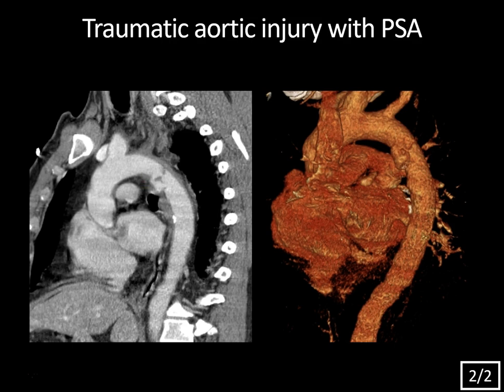Typically, if the injury occurs at the aortic root or ascending aorta in the arch, that tends to require surgical repair. But injuries involving the isthmus, descending aorta, and abdominal aorta can sometimes be repaired with endovascular stent graft introduction, but it depends on the extent of the injury and the stability of the patient.